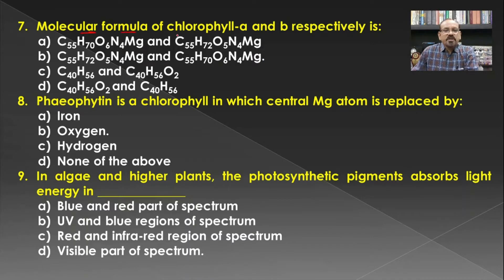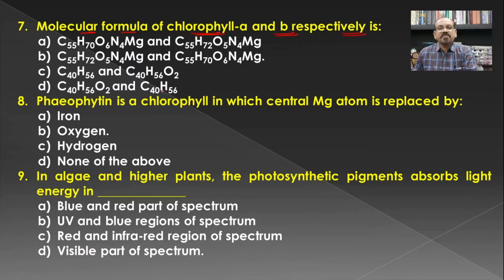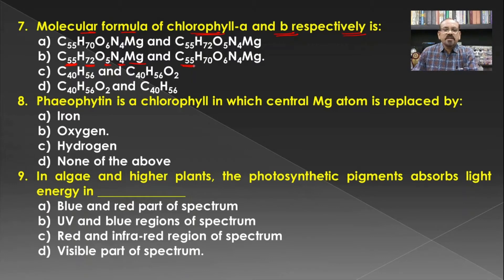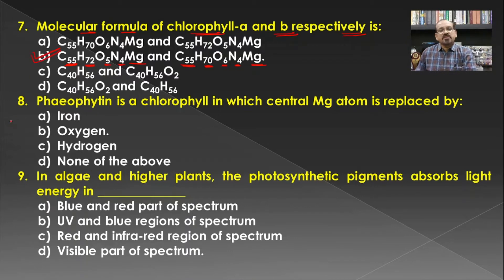The molecular formula of chlorophyll A and chlorophyll B respectively. In chlorophyll A there are 55 carbon, 72 hydrogen, 5 oxygen, 4 nitrogen, and 1 central magnesium. In chlorophyll B there are 55 carbon, 70 hydrogen, 6 oxygen, 4 nitrogen, and centrally placed magnesium in the head of the structure. Hence B is the correct answer for this question.